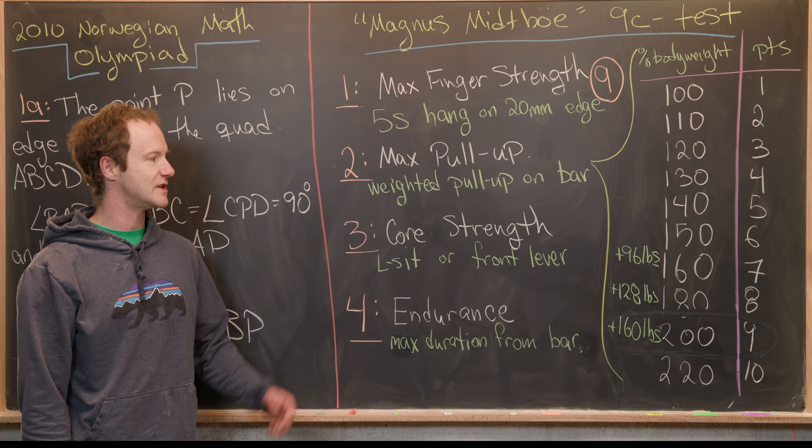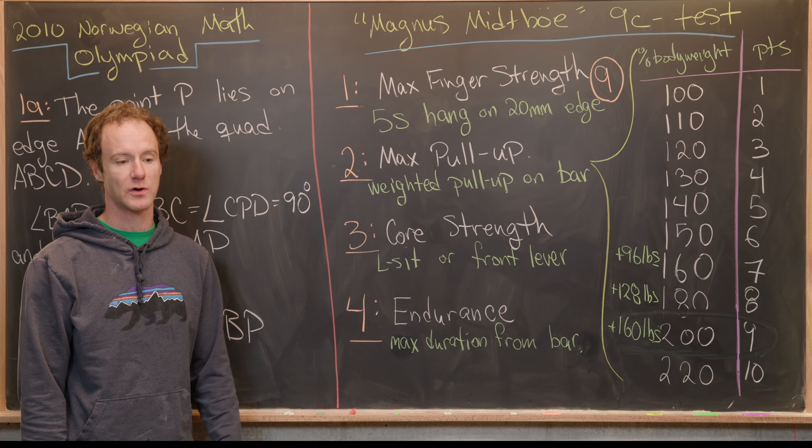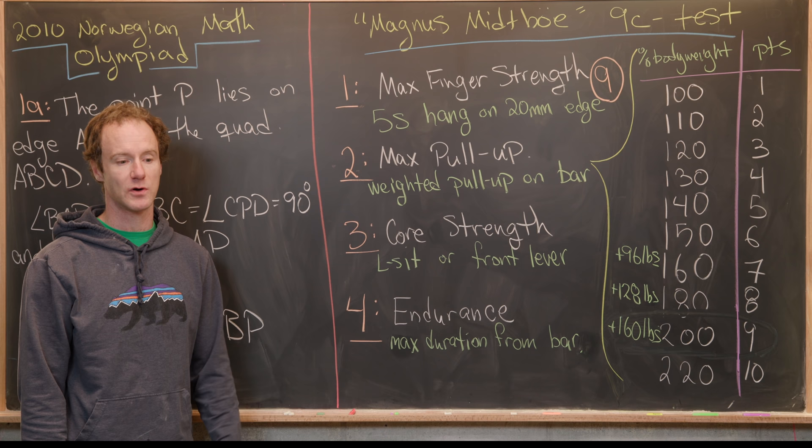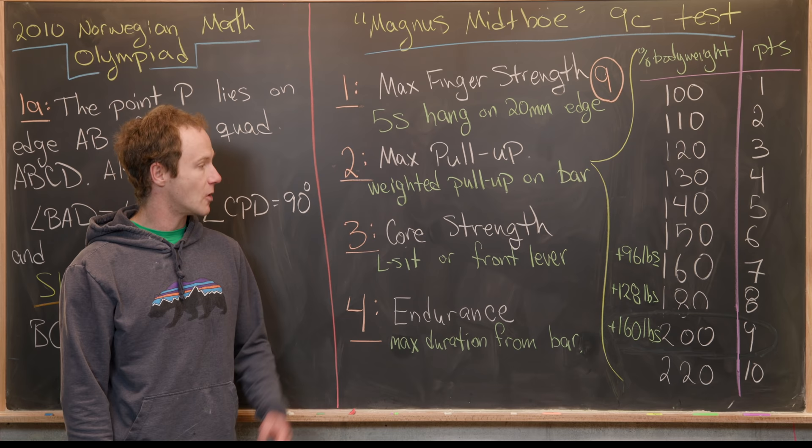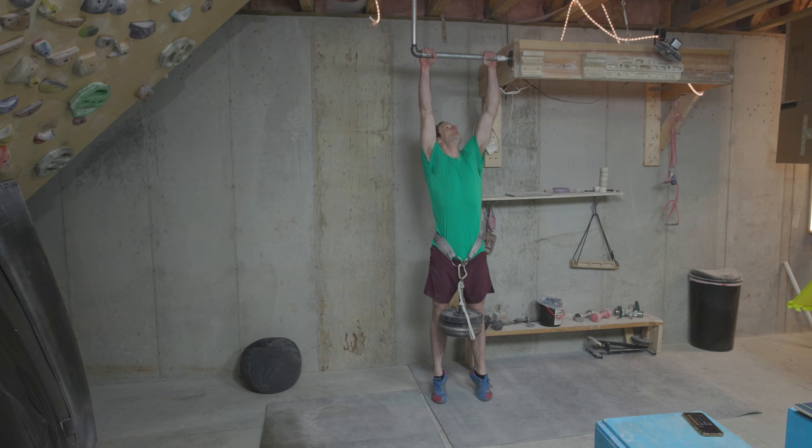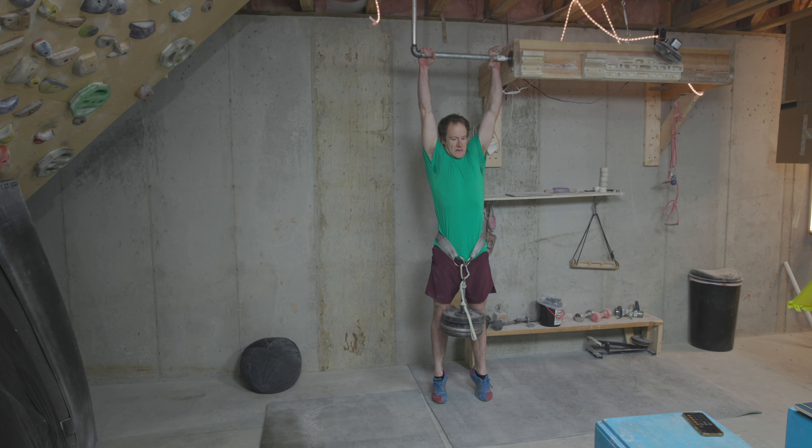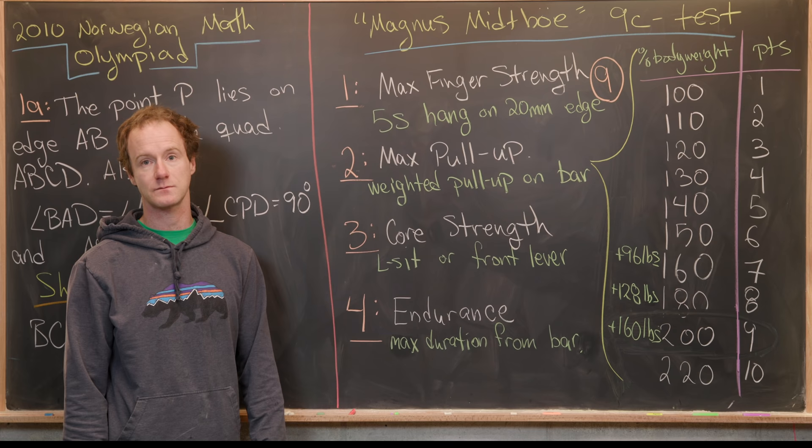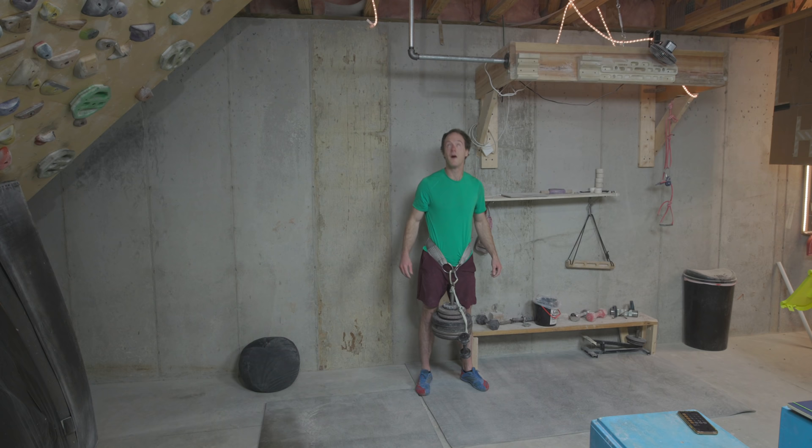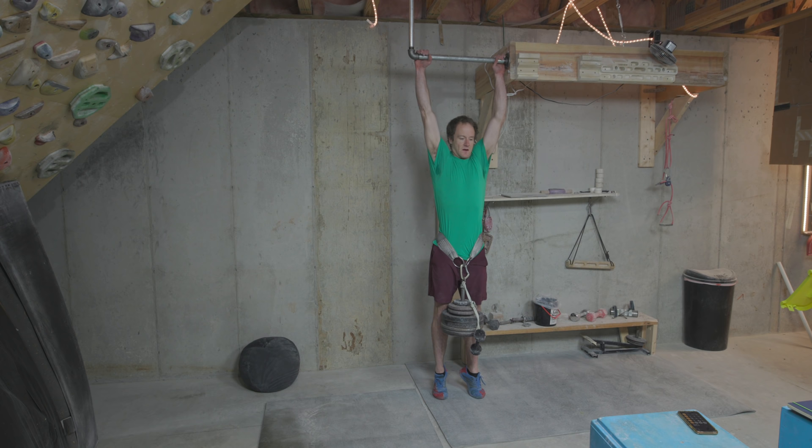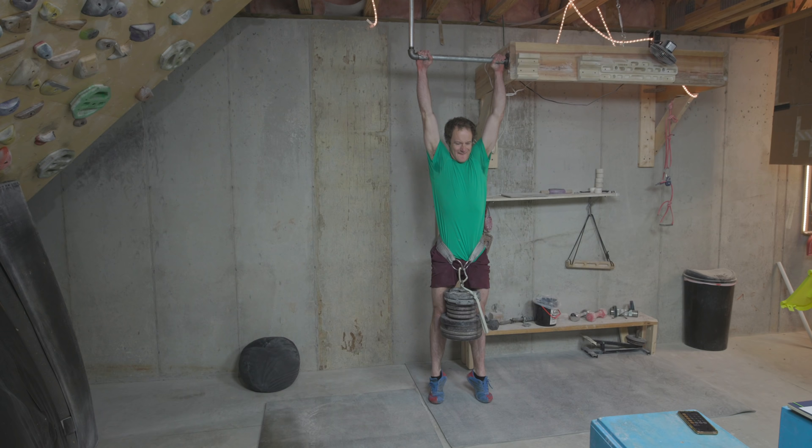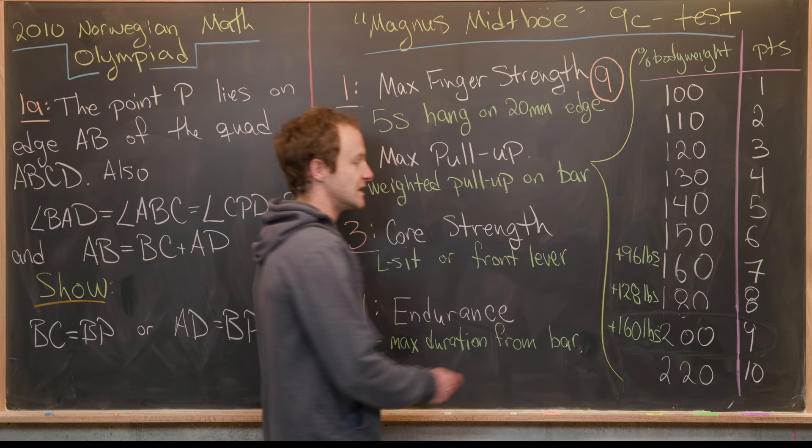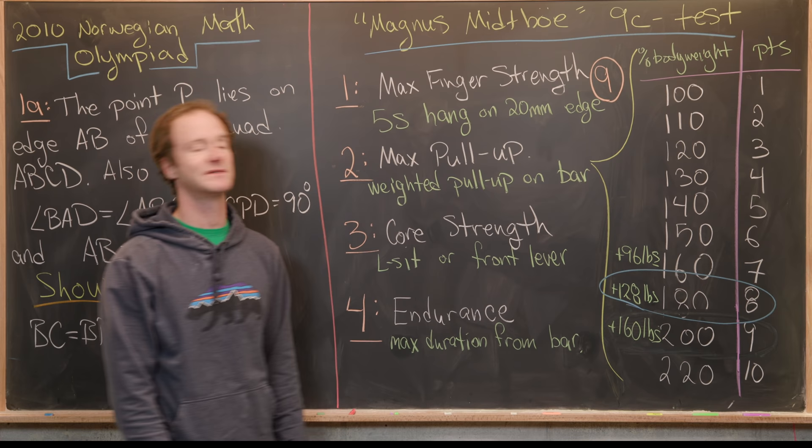So I haven't done super heavy-weighted pull-ups in a while, but a couple years ago, I was doing them quite often. And after a lot of work, I was able to do a single pull-up with an extra body weight. And so that would be nine points. But I was very, very doubtful that I would be able to do that today. So I first tried plus 96 pounds because I can generally do a plus 100-pound pull-up without too much trouble, and that went okay. Then next, I tried the 128-pound pull-up, and I barely made that as well. So, and that's where I ended. As you can see on the video, I tried a plus 160-pound or 200% pull-up, but I couldn't even get close. So here we ended with eight points for the maximum pull-up test.